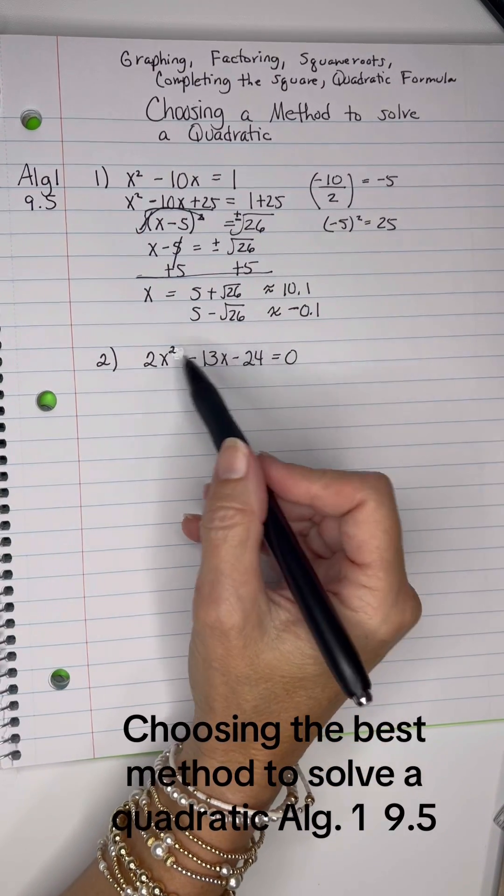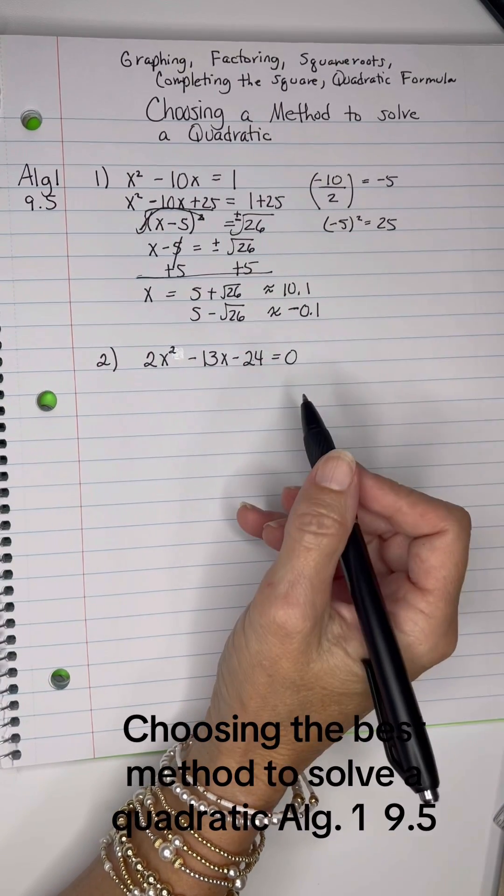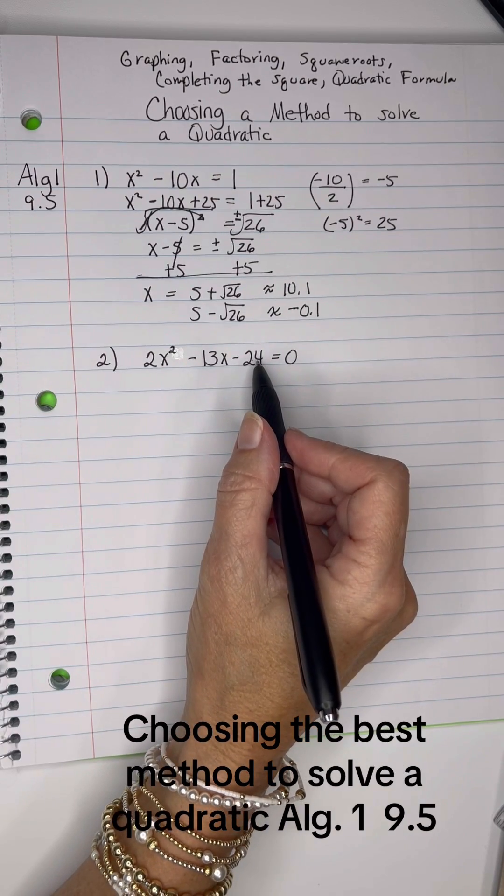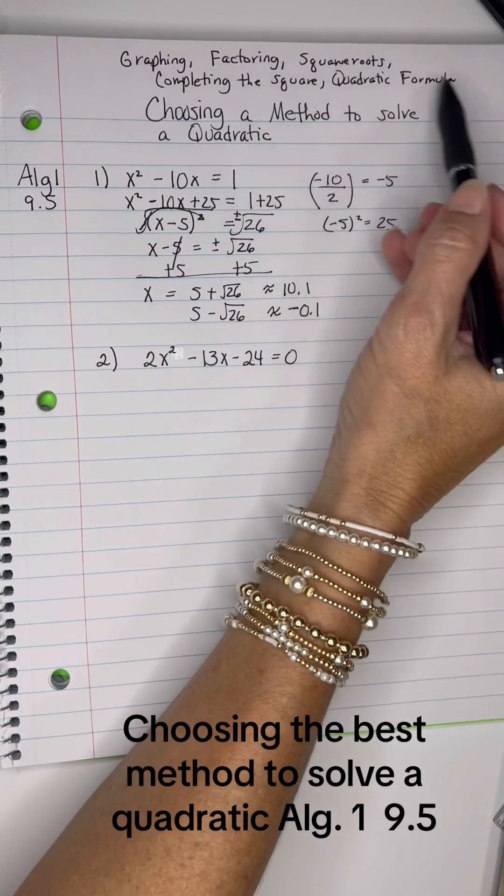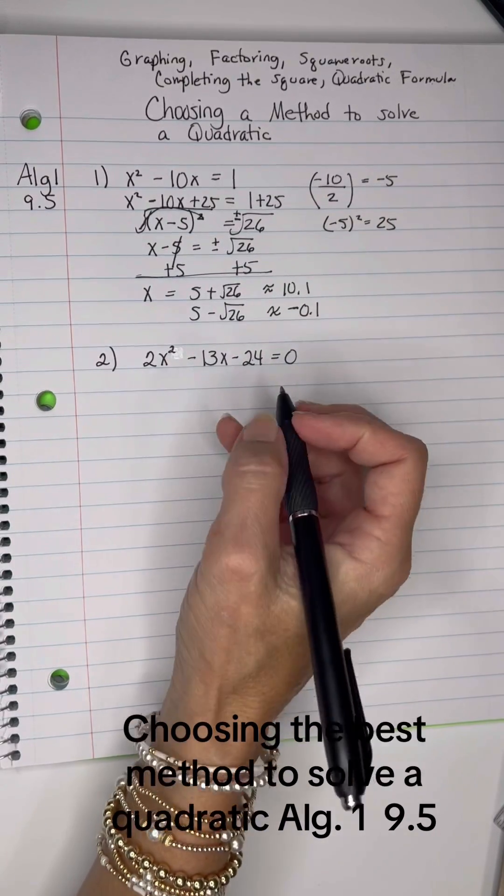Since I've got pretty big numbers here, factoring is not going to be easily done. I could use tic-tac-toe possibly and do that, but I believe in this case I would go with the quadratic formula. That's usually my go-to for any problem that looks like it might be a little bit harder.